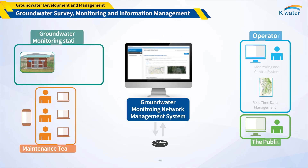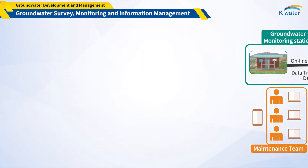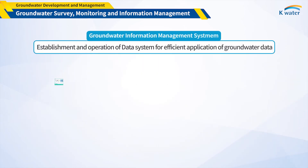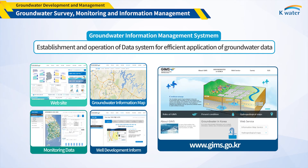The data obtained from the monitoring network is disclosed to universities, businesses, and the public through the Annual Report or website after the final data is analyzed and reviewed. To efficiently use such collected groundwater data, the Integrated Groundwater Information System is available on the National Groundwater Information Center website. The website provides various groundwater data such as GIS map data, statistics, groundwater maps, monitoring data, and well development information.